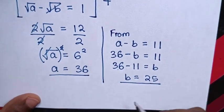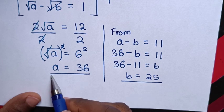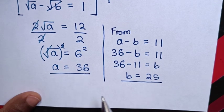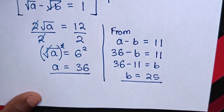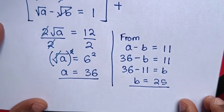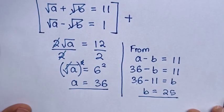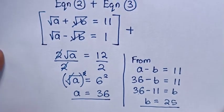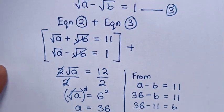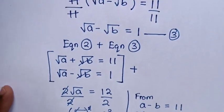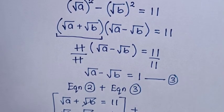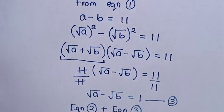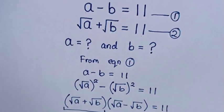Therefore the value of a is 36 and the value of b is 25. Thank you for watching. Don't forget to subscribe to my channel and see you in the next video. Bye bye!